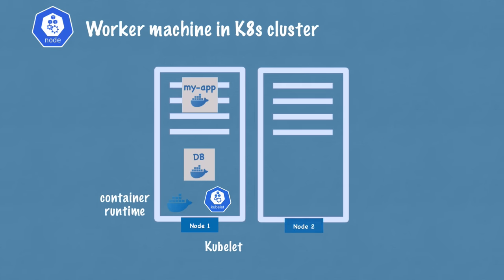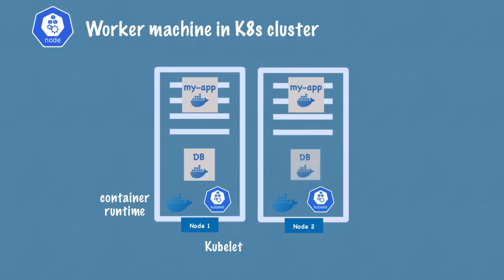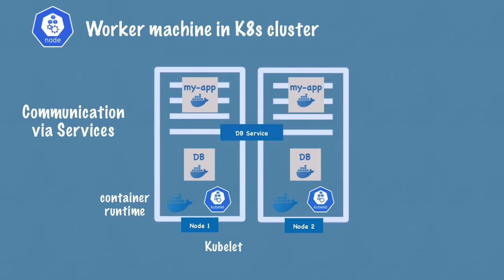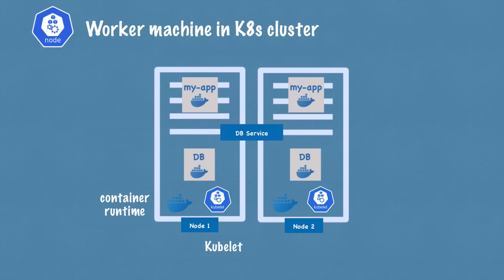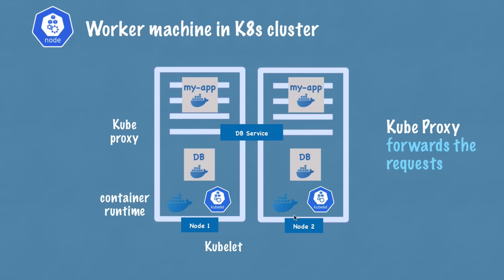Usually a Kubernetes cluster is made up of multiple nodes, which must also have container runtime and Kubelet services installed. You can have hundreds of worker nodes running pods and containers. The way communication between them works is using services — a kind of load balancer that catches the request directed to the pod or application like a database and then forwards it to the respective pod.